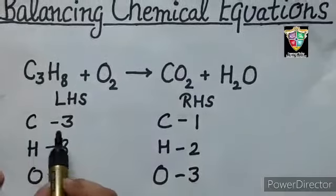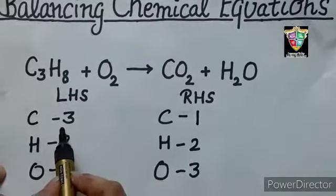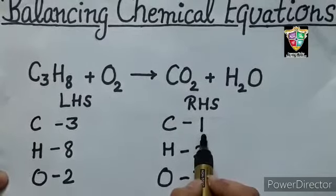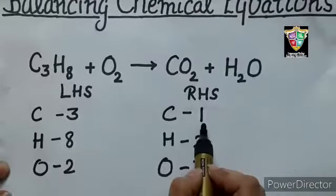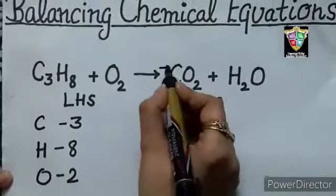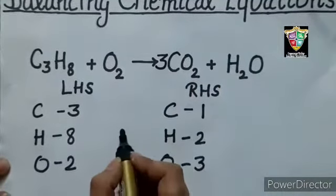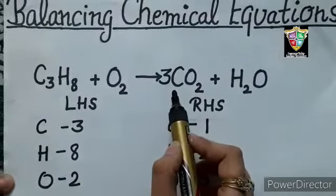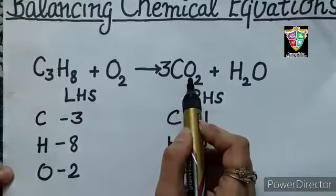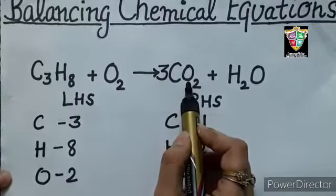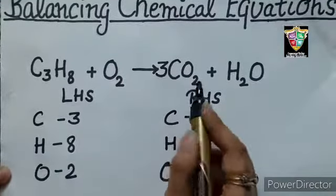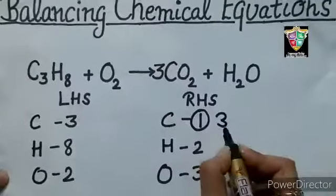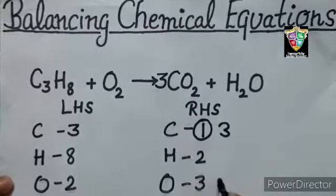Now on LHS, you have 3 carbon and on RHS, you have 1 carbon. So this carbon must be 3. To make this carbon 3, simply multiply with 3. If you multiply with 3, then this 3 is multiplied to C as well as oxygen also. So now the new carbon number will be 3 and new oxygen number will be 3 times 2, 6.